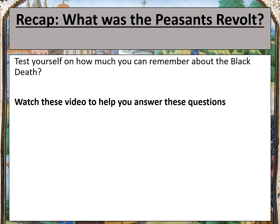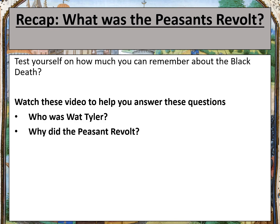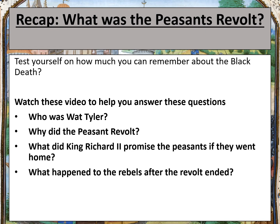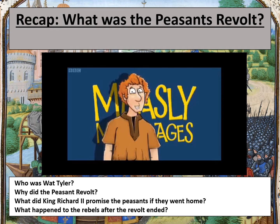Let's do a quick recap to remind you of the events of the Peasants' Revolt. You have four questions to answer that will help you remember the knowledge from last lesson. These are the four questions: Who was Wat Tyler? Why did the peasants revolt? What did King Richard promise the peasants if they went home? And what happened to the peasants' rebels after the revolt ended? Watch the Horrible Histories clip on the next slide to help you answer these questions. You will need your book to help you answer the questions as well. Remember, the four questions that you are trying to answer are at the bottom of the screen.